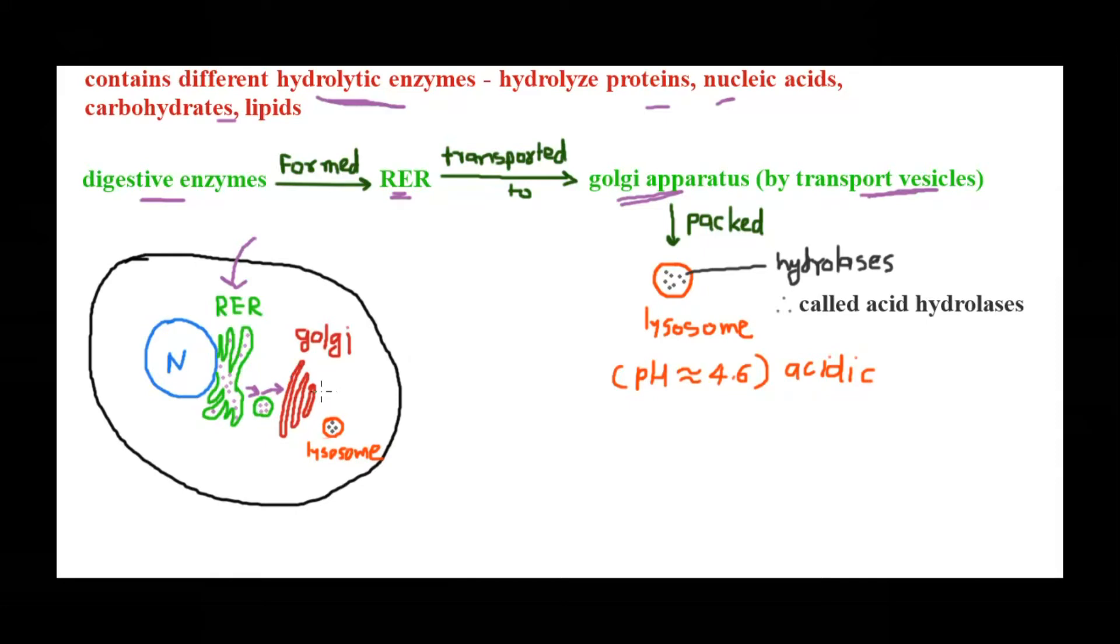Once these proteins reach the Golgi apparatus, they will be packed and bud off in the cytoplasm. Now there is one very peculiar quality about these hydrolases - they need an acidic environment in order to be active. The lysosomal compartment has an acidic environment and the pH is around 4.6. Because of this, they are called acid hydrolases.